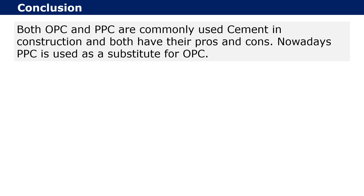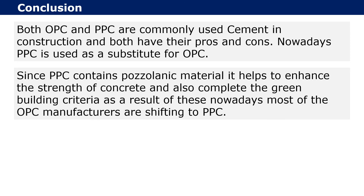Both OPC and PPC are commonly used cements in construction and both have their pros and cons. However, PPC is used as a substitute for Ordinary Portland Cement. Since PPC contains pozzolanic material, it helps to enhance the strength of concrete and also meets green building criteria. As a result, nowadays most OPC manufacturers are shifting to PPC.